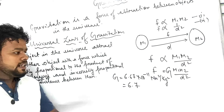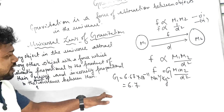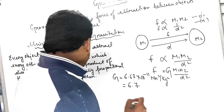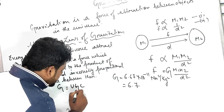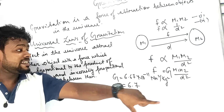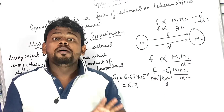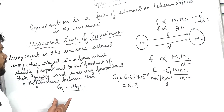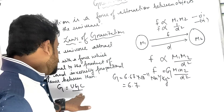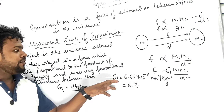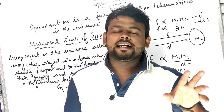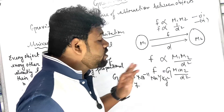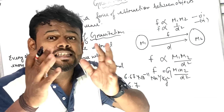G is the Universal Gravitational Constant. When we remove the proportionality sign from F ∝ M1 × M2 / d², we introduce G as the constant. So F = G M1 M2 / d². The value of G is 6.67 × 10⁻¹¹ N·m²/kg². Now let us derive the unit of G.